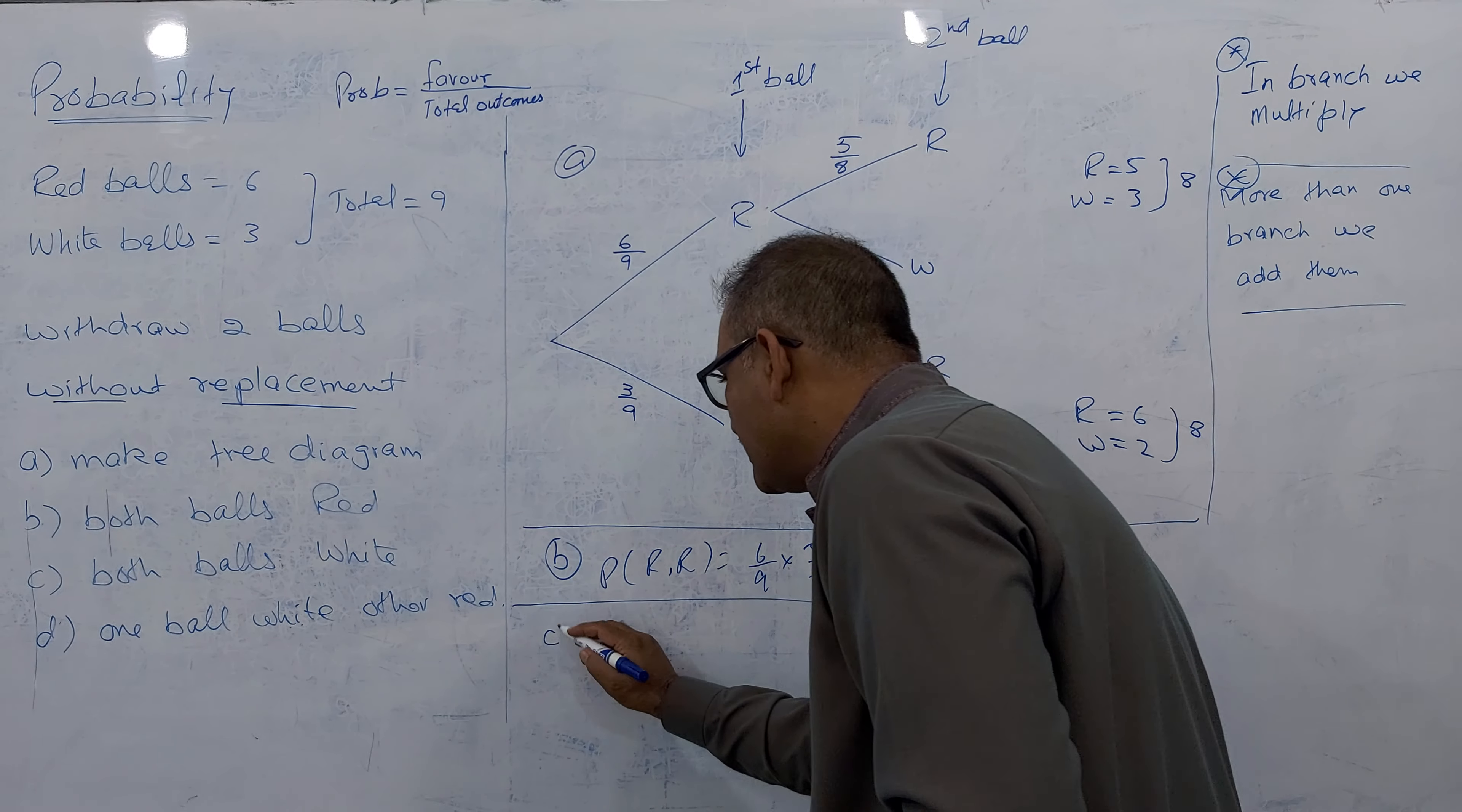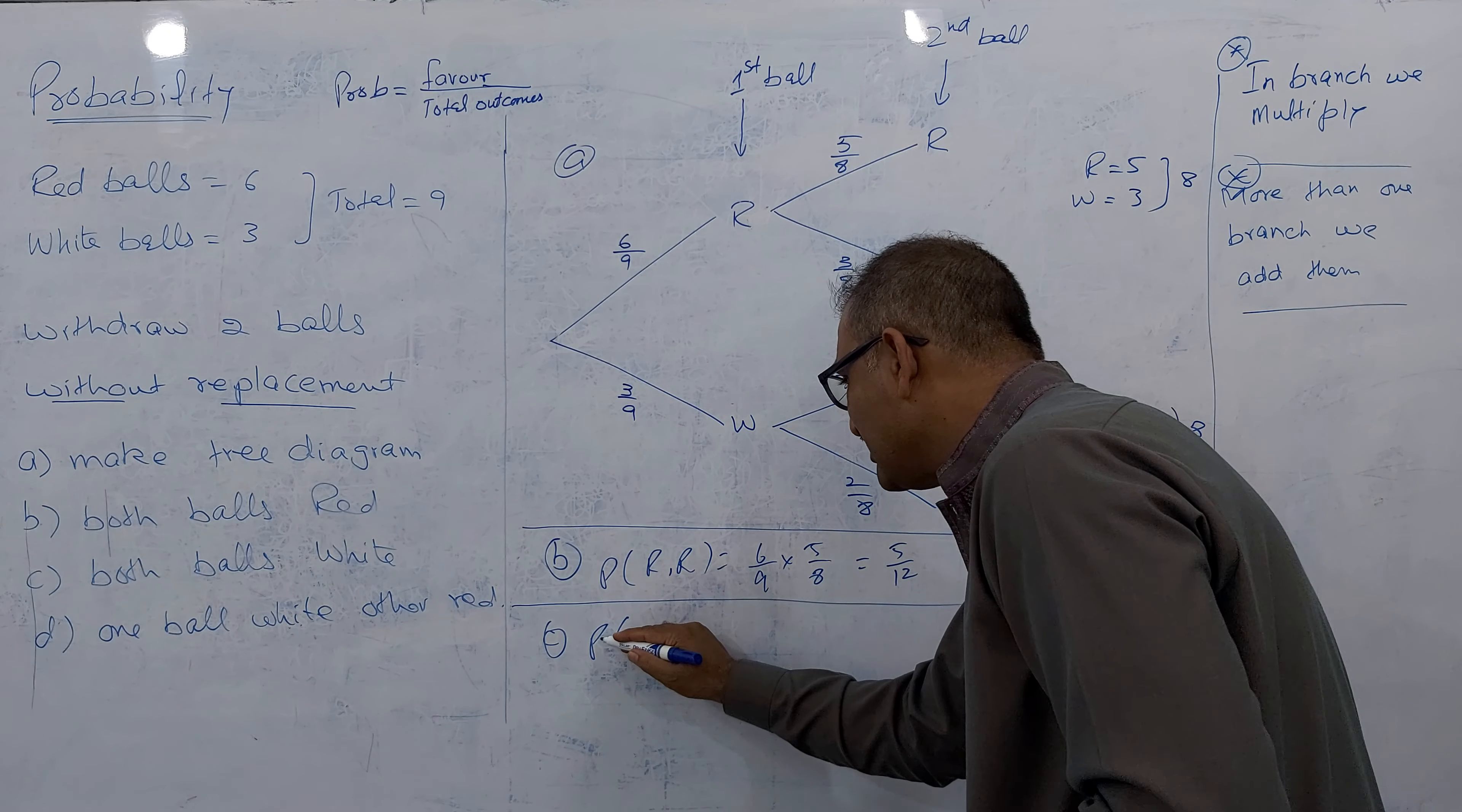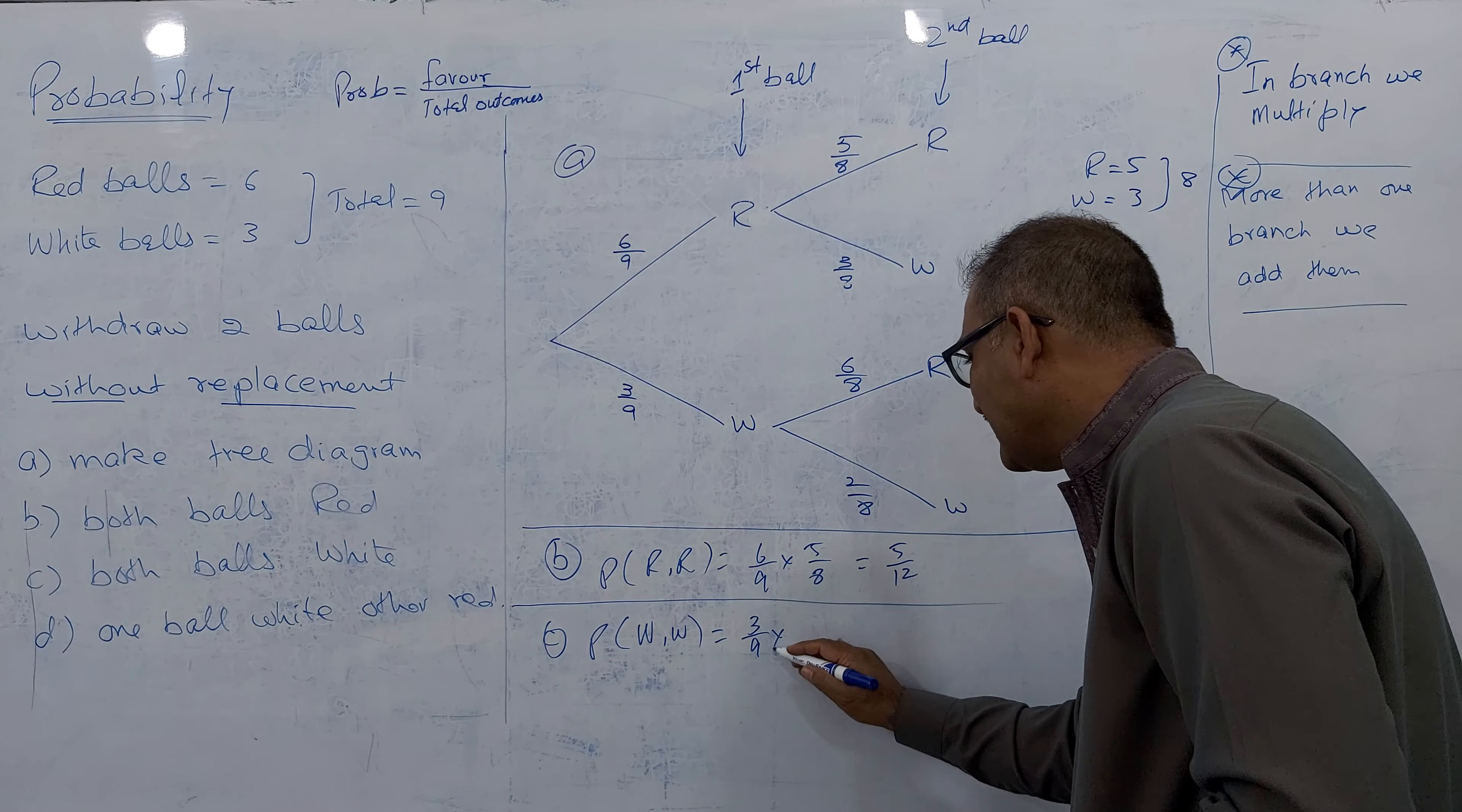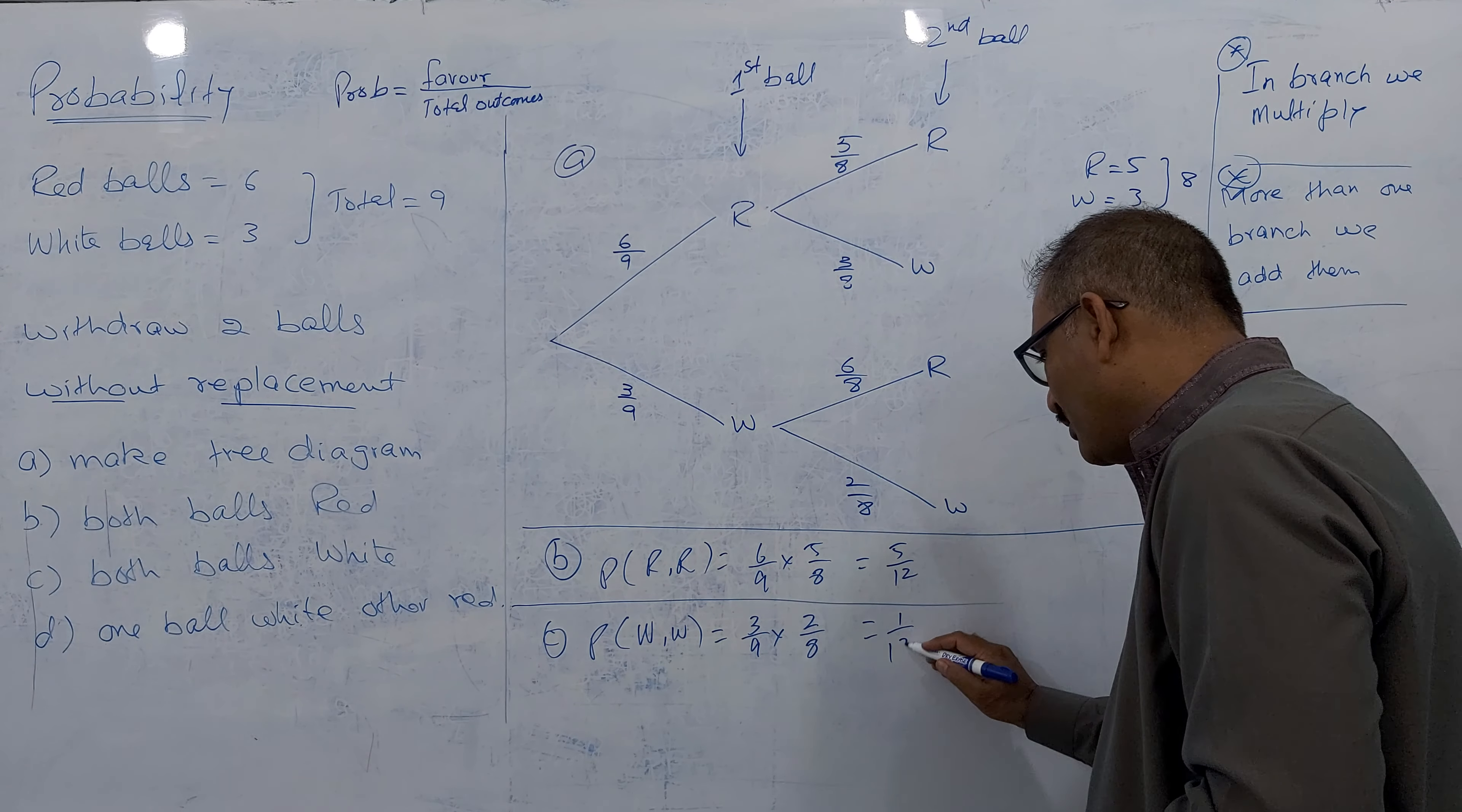Let's go for C part. He said both balls are white. White white is here. Probability of white and white is what? 3 by 9 into 2 by 8. Answer becomes 6 by 72. Answer becomes 1 by 12.